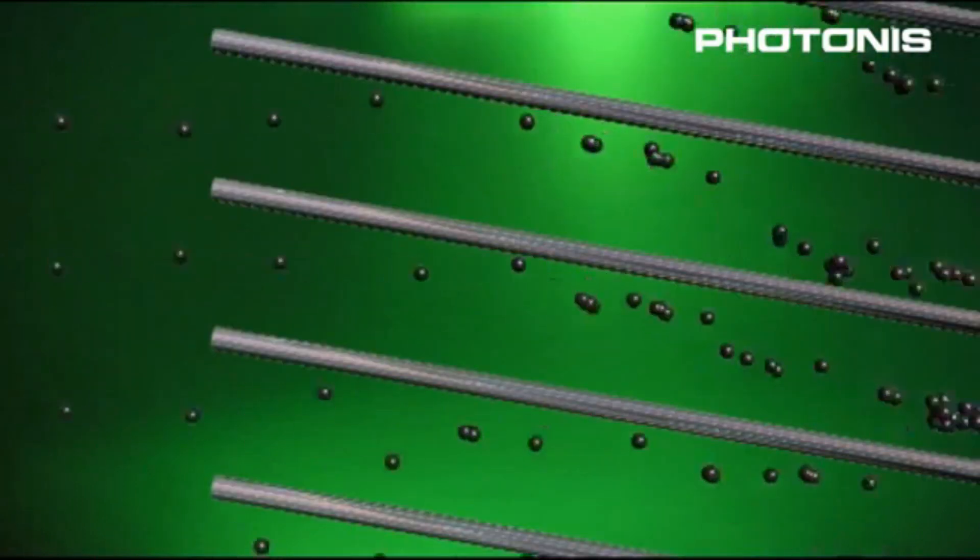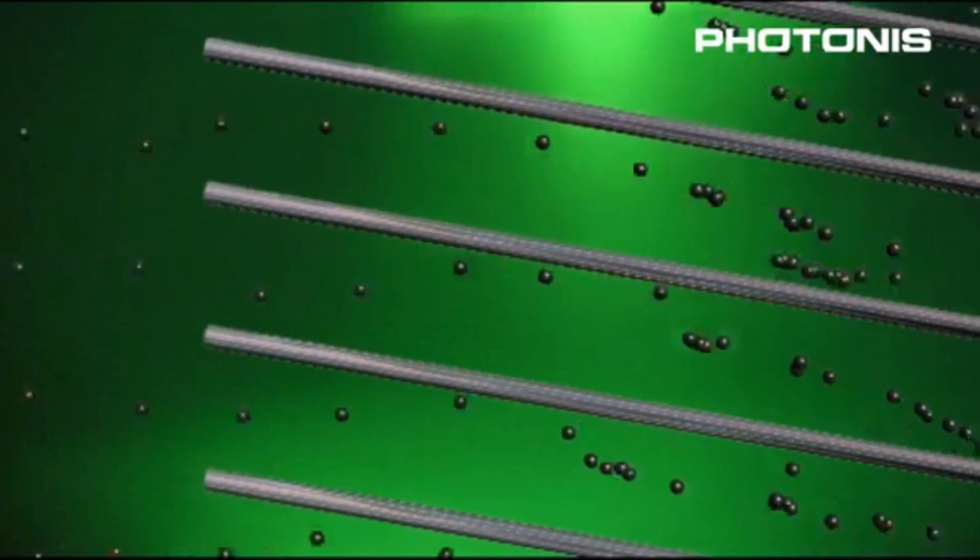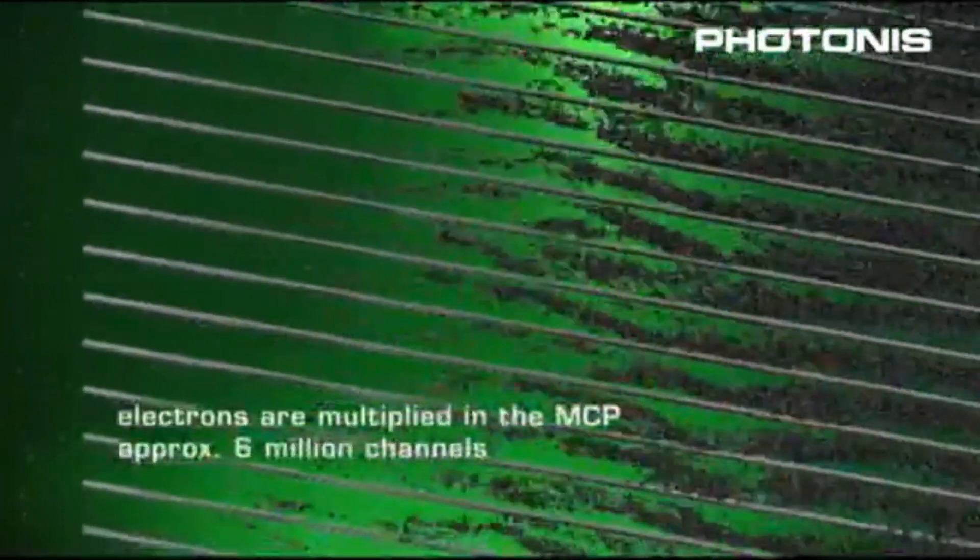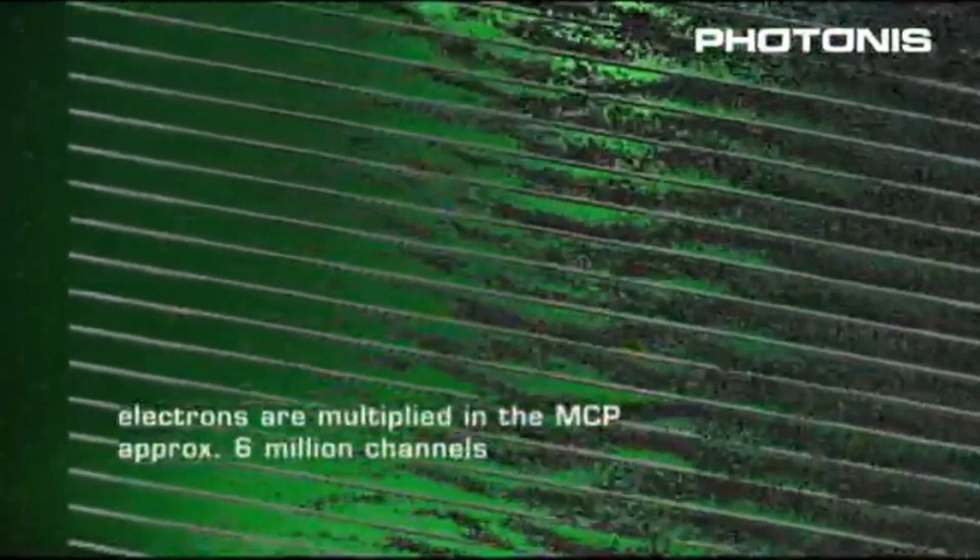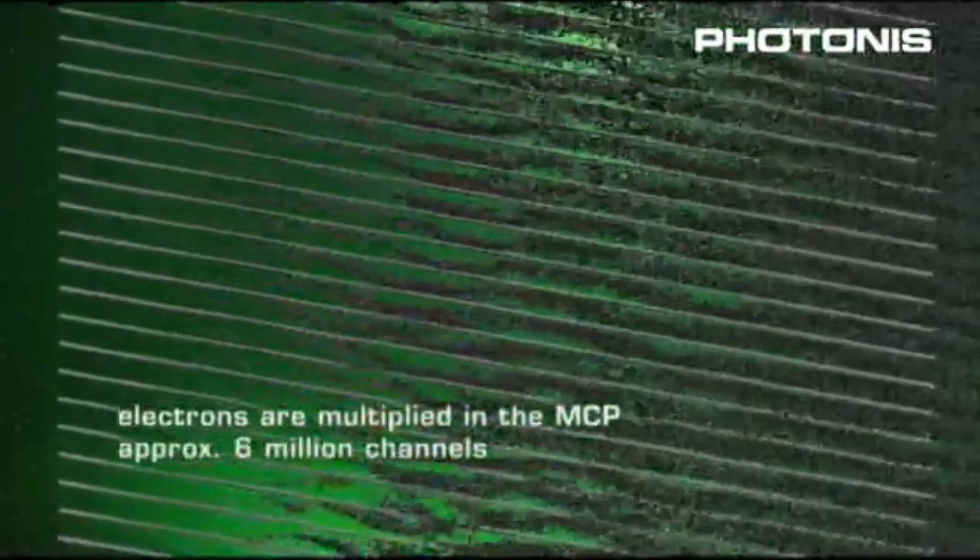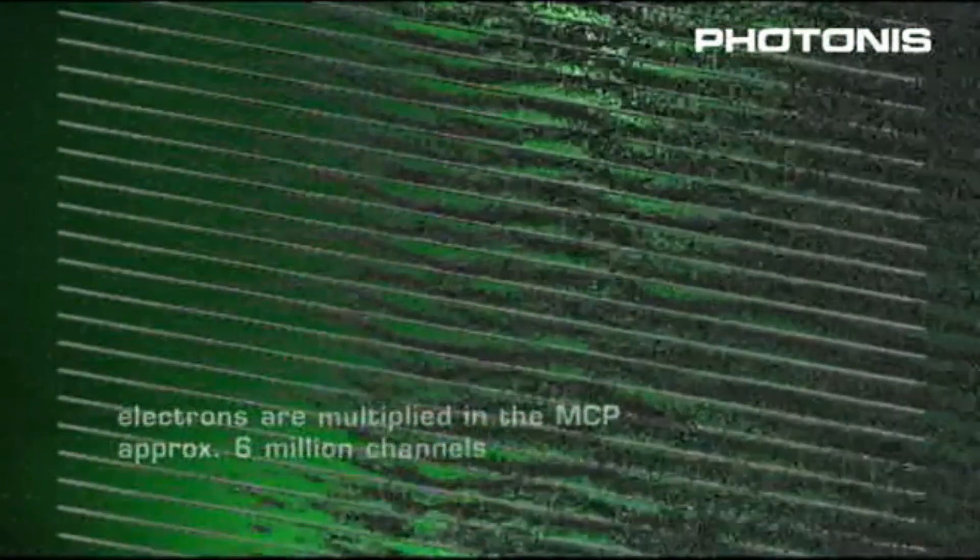Photons from a low-light source enter an objective lens which focuses an image into a photocathode. The photocathode releases electrons via the photoelectric effect as the incoming photons hit it. The electrons are accelerated through a high-voltage potential into a microchannel plate, or MCP.